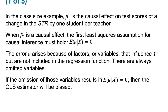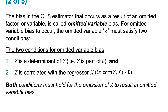However, if the omission of those variables results in not satisfying the first least-squares assumption — so that the expected value of u given x is not equal to zero — then we are going to have an OLS estimator that is biased. That is what we call omitted variable bias. The bias in the OLS estimator that occurs as a result of an omitted factor or variable is called omitted variable bias.